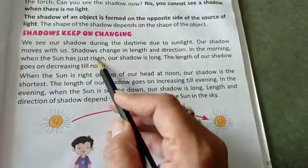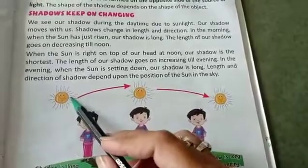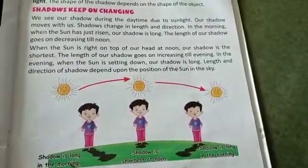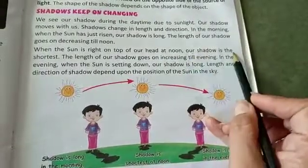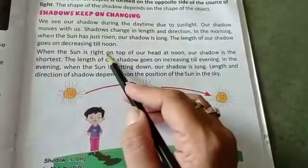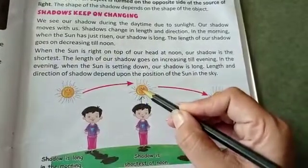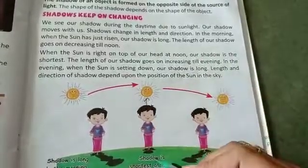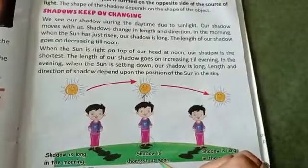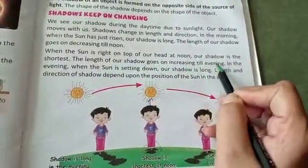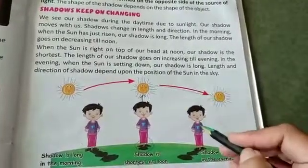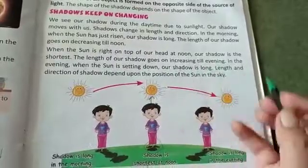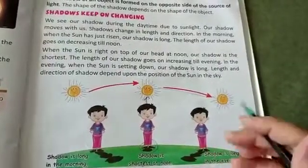In the morning when the sun has just risen, our shadow is long. When the sun is right on top of our head at noon, our shadow is the shortest. The length of our shadow goes on increasing till evening. After noon, the shadow keeps increasing, and in the evening when the sun is setting, our shadow becomes long again.